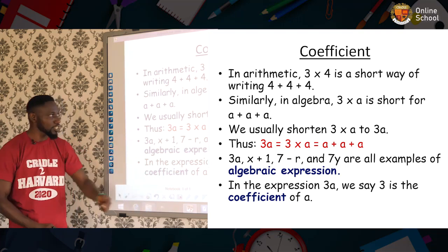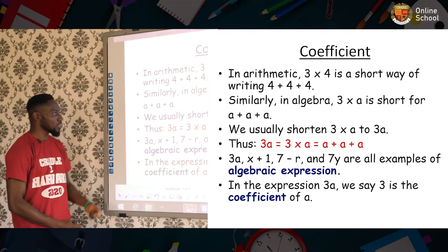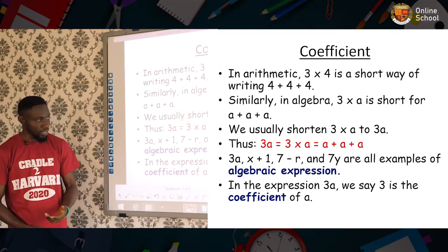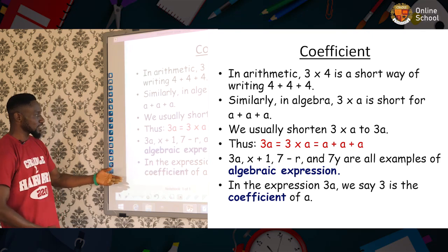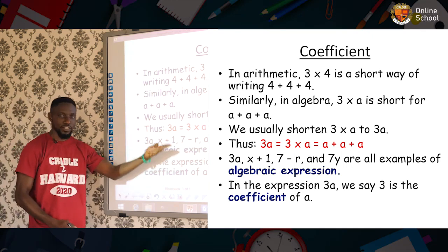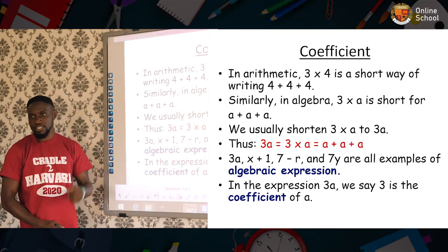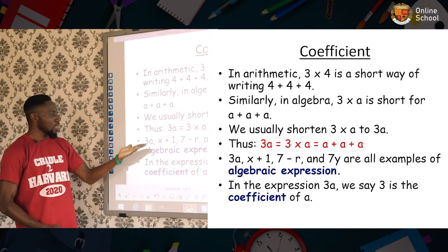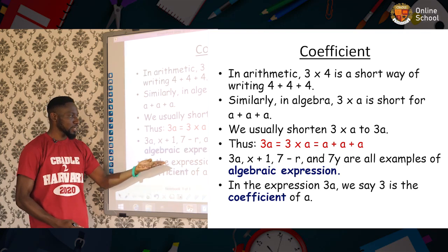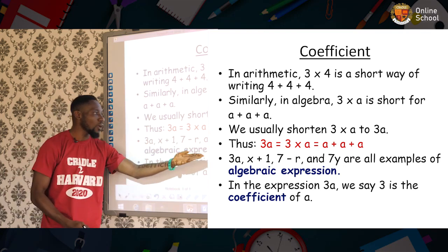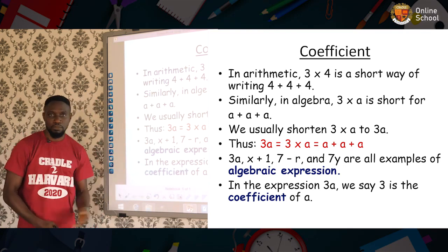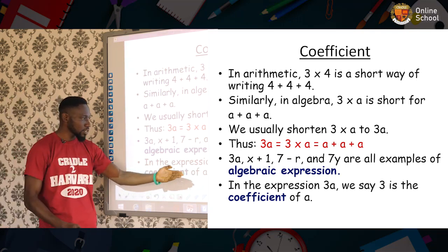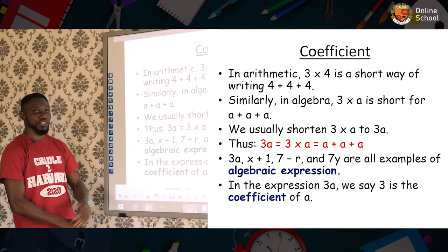Now, we usually shorten 3 × a to be 3a in algebra. Also, you should also understand this, that in other words, 3a can be written as 3 × a, and it can be written as a + a + a. Now, all of these examples: 3a, x + 1, 7 - r, and 7y are all examples of algebraic expressions. Now, in algebra, 3a, we say 3 is the coefficient of a.